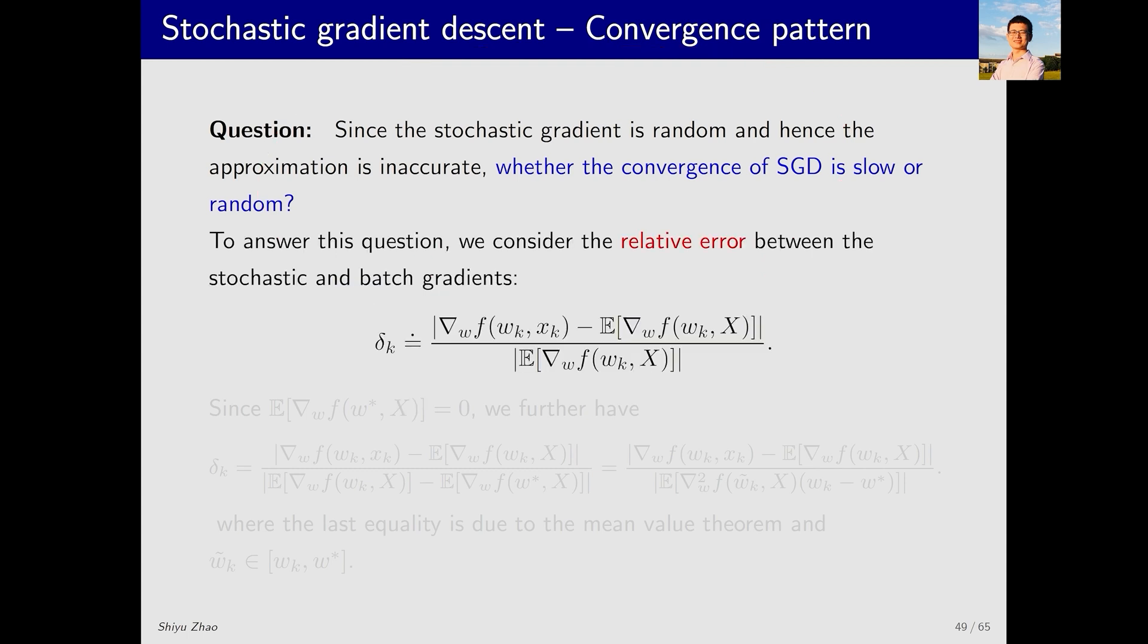Let's analyze its behavior using a quantity, relative error, denoted by delta_k. What is this? Let's look at the numerator, which has two terms, the stochastic gradient and the true gradient. The numerator is the absolute error between these two gradients. The denominator is the absolute value of the true gradient.